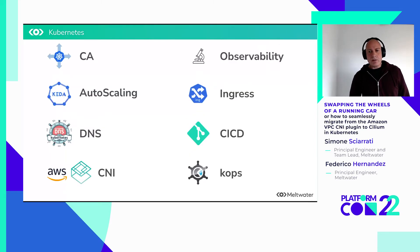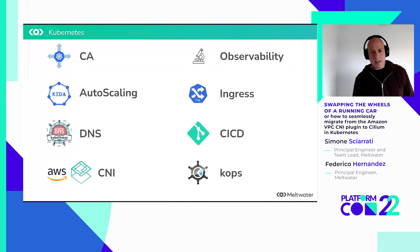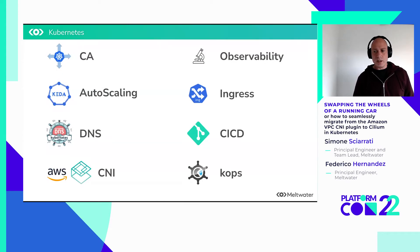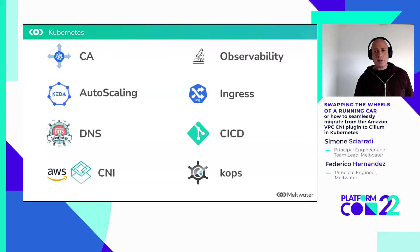Inside our clusters, we run a few add-ons that our users rely upon — for example, the cluster autoscaler so they don't need to worry about capacity, KEDA autoscaling, ingress, Prometheus, external DNS, and so on. We run in AWS, and we manage our cluster with KOPS, which is a tool in the Kubernetes project. And when we started with Kubernetes, we chose the Amazon VPC CNI plugin, as at the time it was the only supported option for native routing.